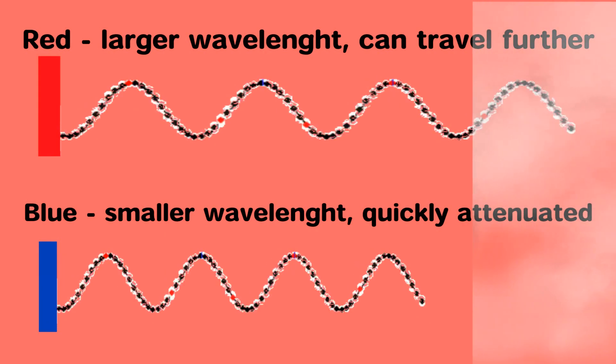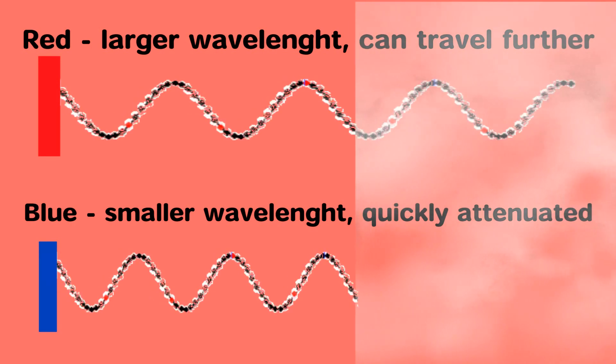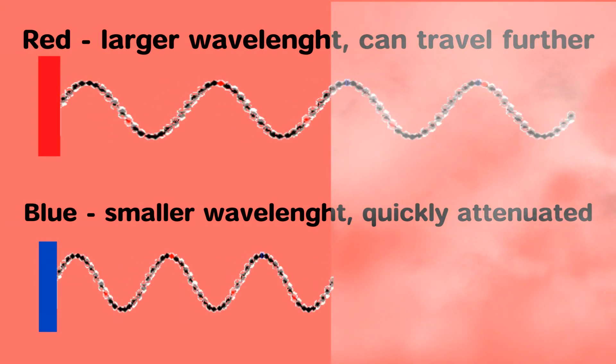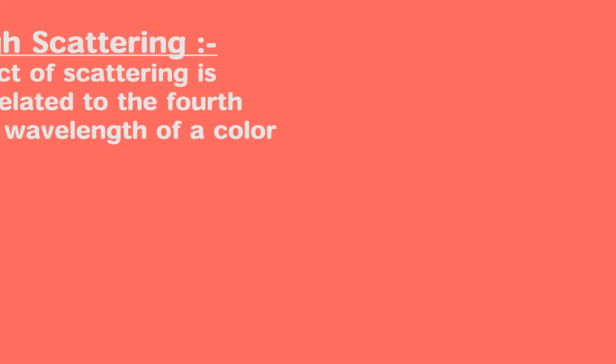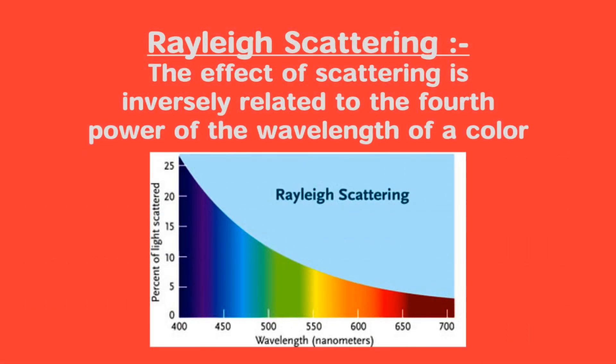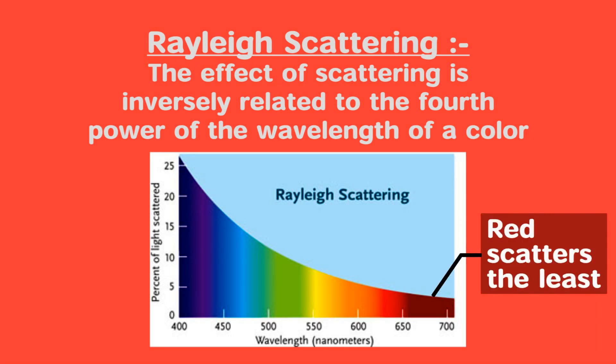Also, red color is least scattered in air and can penetrate through fog, dust, haze, etc. This is due to Rayleigh scattering effect, which states that the effect of scattering is inversely proportional to 4th order of wavelength.